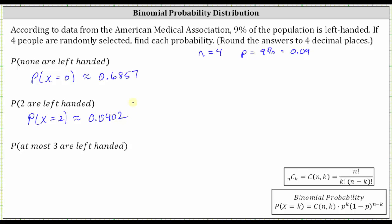And for our last probability, we want the probability at most three are left-handed, which would be the probability that X is less than or equal to three. At most three are left-handed means zero, one, two, or three people would be left-handed.